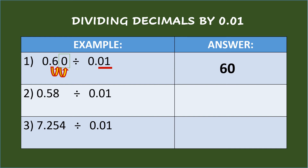Second example: fifty-eight hundredths divided by one-hundredth. Again, the divisor has two decimal places, so move the decimal point of the dividend two places to the right and put the decimal point afterwards. So the answer is fifty-eight.